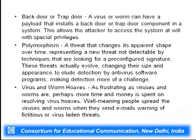Welcome back friends. We were discussing various threats regarding information security. After Trojan horses, the next one is back door or trap door: a virus or worm can have a payload that installs a back door or trap door component in a system. This allows the attacker to access the system at will with specialized privileges. These types of viruses or worms get stored in a particular system and whenever an attacker wants access, they activate and grant special privileges to the attacker.